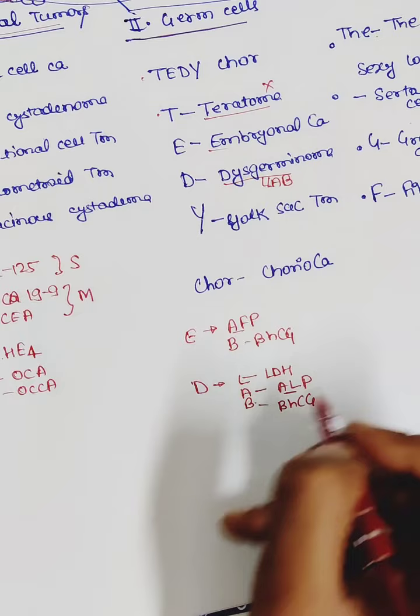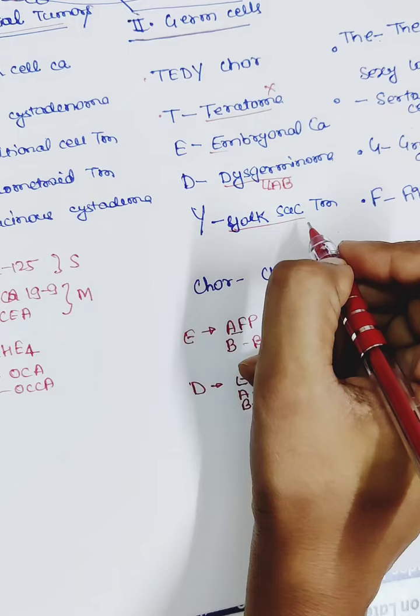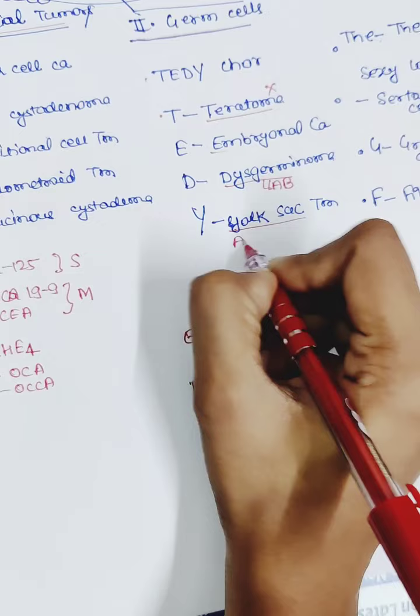And the tumor marker for yolk sac tumor. This tumor is also called endodermal sinus tumor. And the tumor marker is alpha-fetoprotein, alpha-1 antitrypsin.